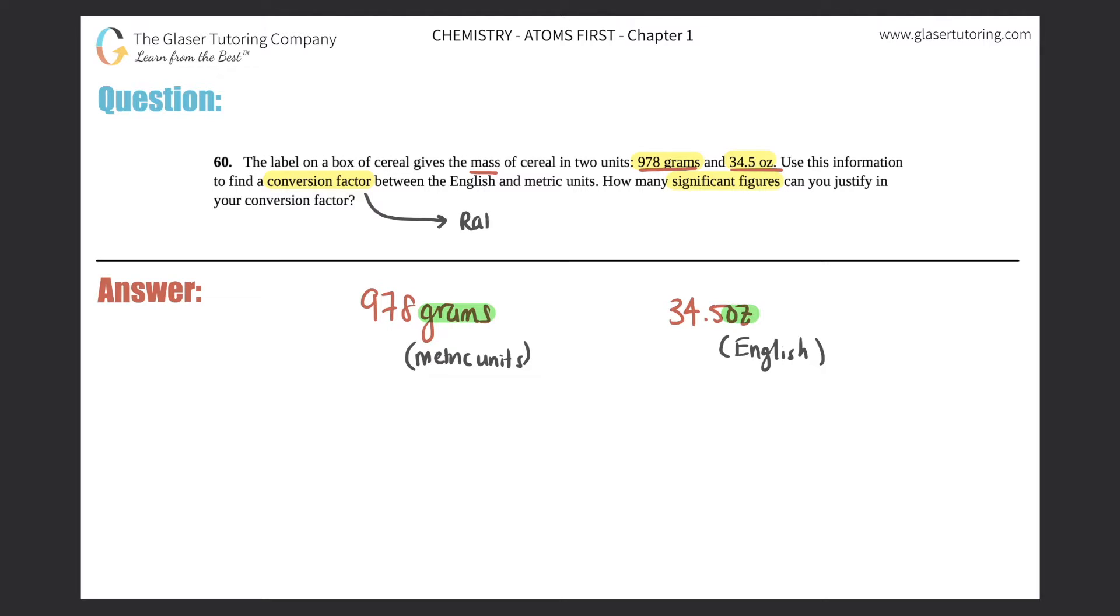We just want to find a single conversion factor between these units. Now remember, if we want to find a conversion factor we just have to use a ratio, which means that it's one unit - unit number one - divided by, which means equal in this case, to another unit - unit number two. The example that I like to use is one dozen of eggs equals 12 individual eggs. If you see, I use two different units: a dozen and then an individual single egg.